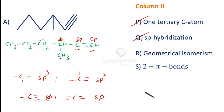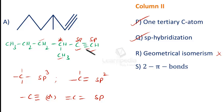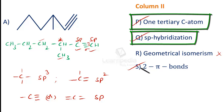To exhibit geometrical isomerism, there must be at least one double bond where the double-bonded carbon atoms are each attached to two different atoms or groups. Compound A has no double bond, so there is no chance of geometrical isomerism. However, the triple bond contains two pi bonds — the first bond formed is a sigma bond and the remaining two are pi bonds — so property S is satisfied. The correct match for A is P, Q, and S.